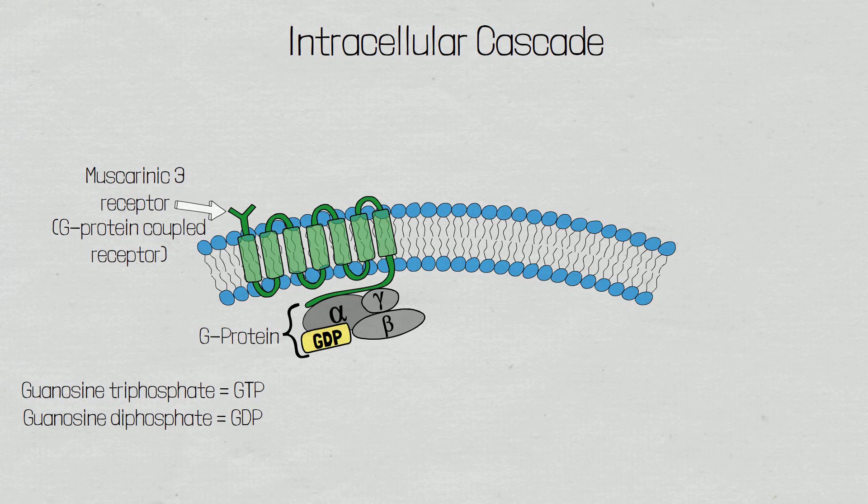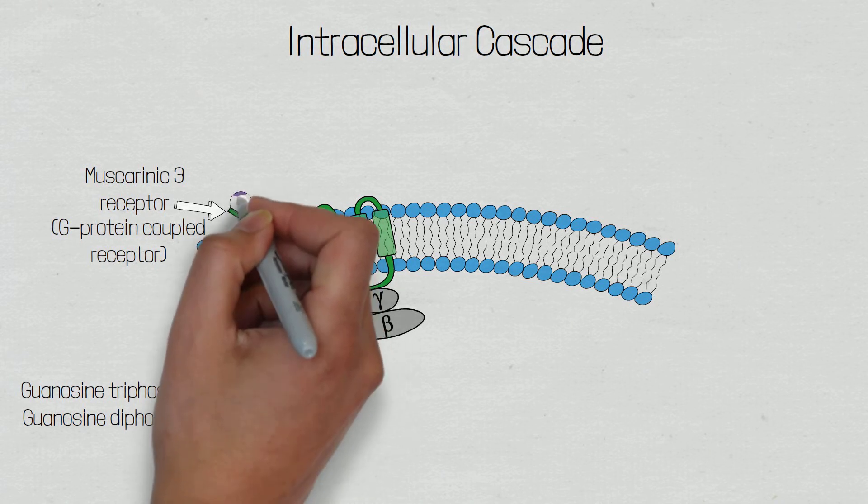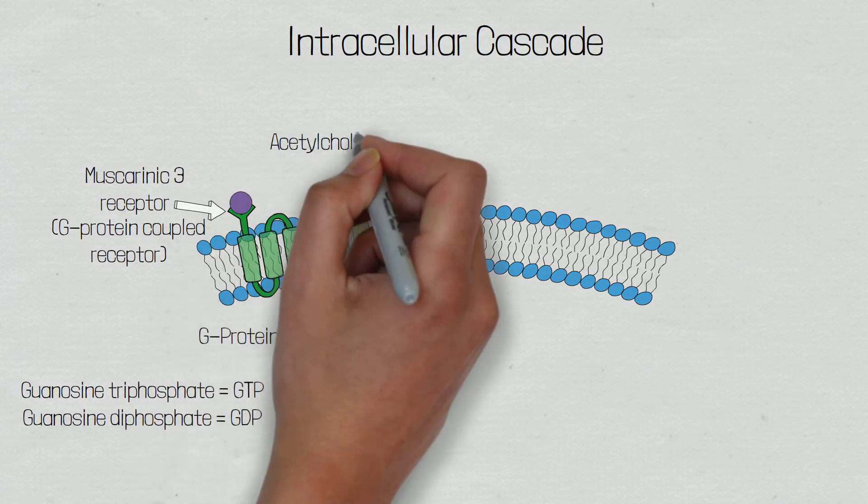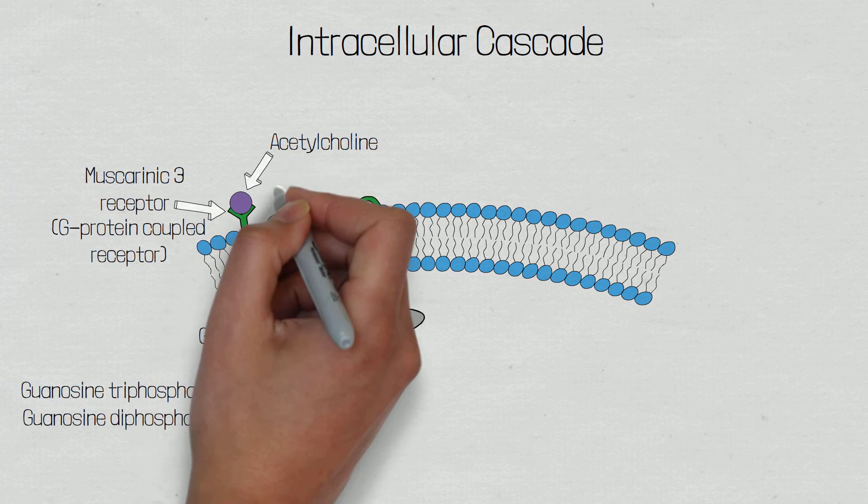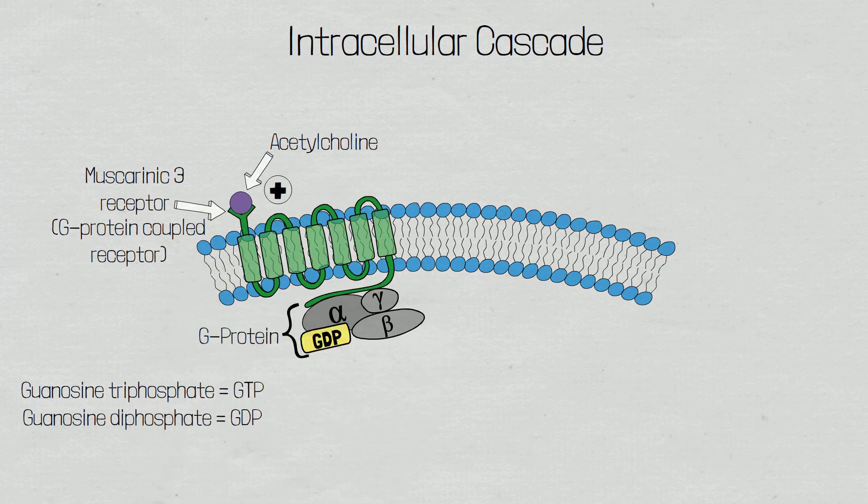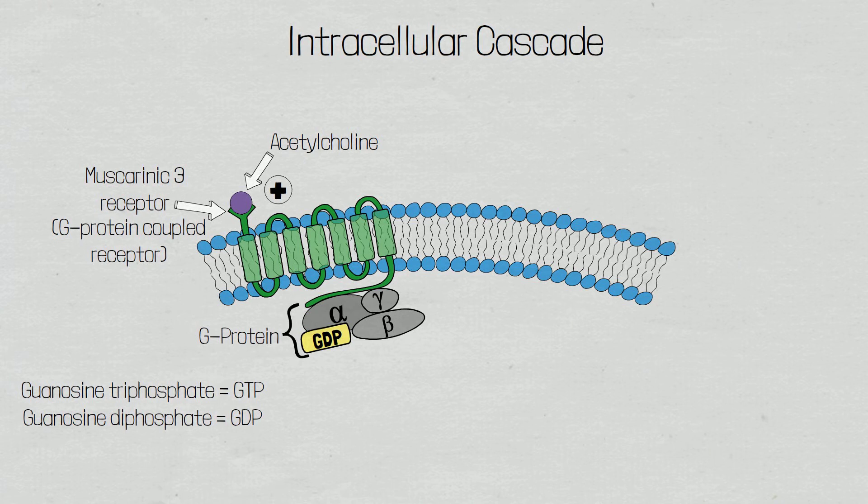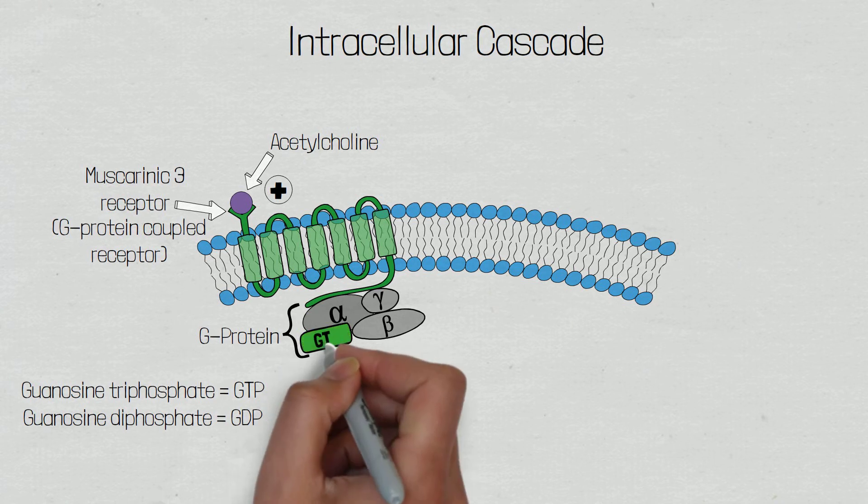So now we have an understanding of the G-protein coupled receptor's structure, let's look at the intracellular cascade when the neurotransmitter acetylcholine binds to the muscarinic 3 receptor. When acetylcholine binds to the muscarinic 3 receptor, it causes a conformational change in the receptor's shape.